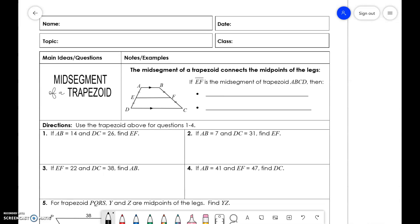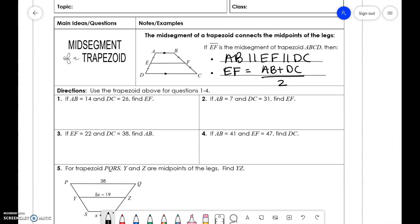Last set of notes for today is triangle midsegment. Triangle midsegment talks about that if there is a line that is in the middle of this trapezoid, like EF, then we say that AB is parallel to EF, which is parallel to DC. We can find the length of EF by adding AB plus DC and dividing by 2. We need to find the length of EF. So, we add 14 plus 26 and divide by 2. We get 40 divided by 2, which is 20. Same thing here, 7 plus 31 equals 38, divided by 2, and we get 19.